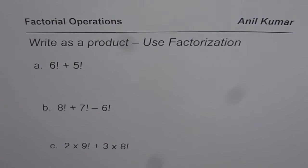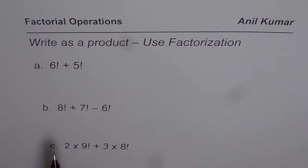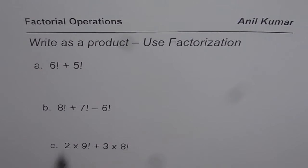I'm Anil Kumar and now let us further explore some factorial operations. The question here is: write as a product, meaning you need to use factorization. We are given three parts. First one is 6 factorial plus 5 factorial. Then we have 8 factorial plus 7 factorial minus 6 factorial. And then we have 2 times 9 factorial plus 3 times 8 factorial.